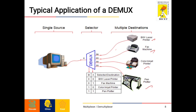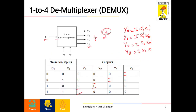The typical application of a demultiplexer is a single source, some select lines, and multiple destinations. For example, a computer can be connected to a laser printer, a fax machine, a color inkjet printer, and a plotter. The 1-to-4 demultiplexer has a single input I and multiple outputs Y3, Y2, Y1, and Y0. Since it is 1x4, 2 power N gives two select lines S1 and S0. For the truth table: S1=0, S0=0 gives output I at Y0; S1=0, S0=1 gives I at Y1; S1=1, S0=0 gives I at Y2; S1=1, S0=1 gives I at Y3. The equations are: Y0 = I · S1 bar · S0 bar; Y1 = I · S1 bar · S0; Y2 = I · S1 · S0 bar; Y3 = I · S1 · S0.